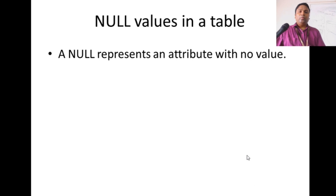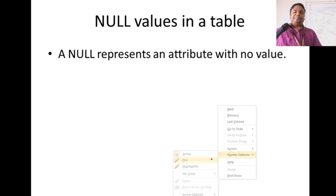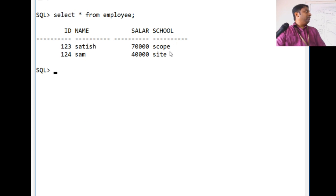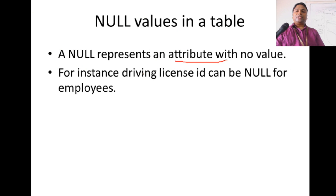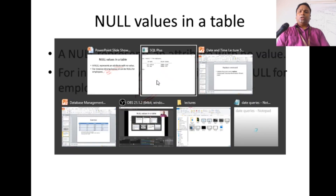Our discussion for today's class will be on null values in a table. Null values mean an attribute with no value in your table. To understand null values, we have already created an employee table with some records. We are going to add a driving license ID column for the employees. It's not mandatory for all employees to have a driving license ID, so when a value is missing for an employee, that is called a null value.